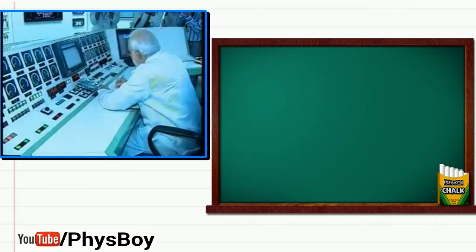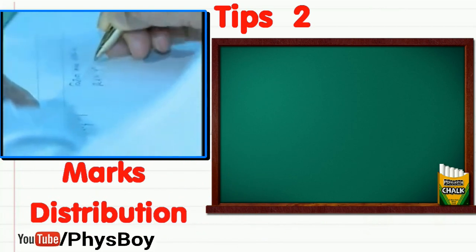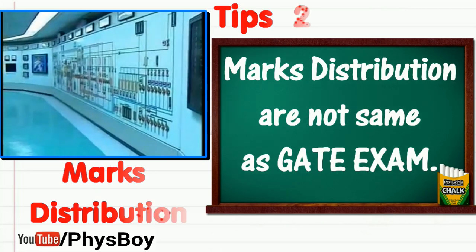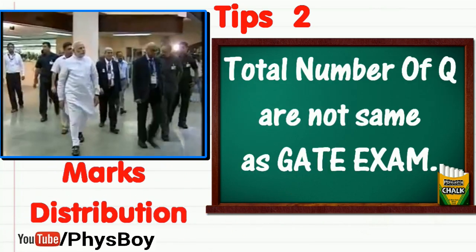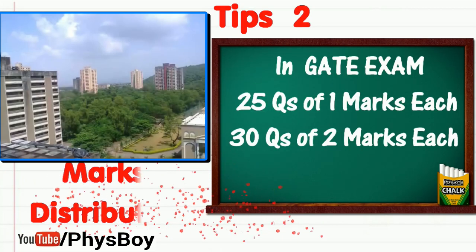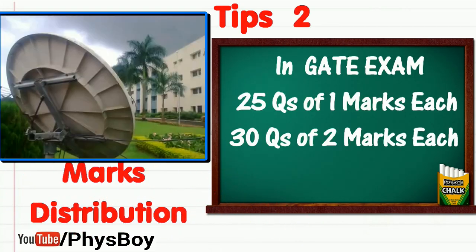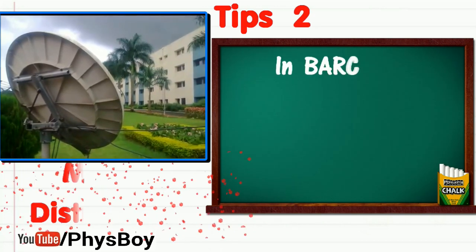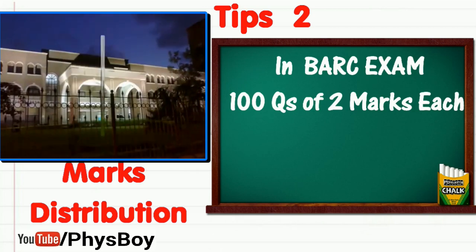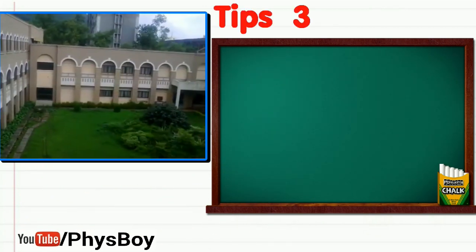Tip number two: marks distribution. Although the syllabus is the same as the GATE exam, the marks distribution and number of questions are different. In GATE there are 25 questions of 1 mark each and 30 questions of 2 marks each, totaling 85 marks from the physics part. In the BARC online exam there are 100 questions of 2 marks each, so the total marks is 200.